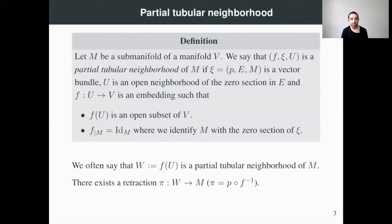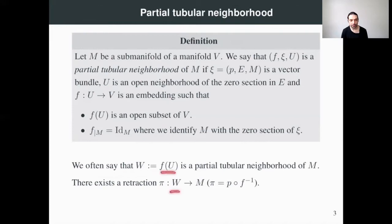The remainder of the definition is the same. We often say that W, the image of U, is a partial tubular neighborhood of M. Since we have the projection of the vector bundle defined in U, we again get a retraction pi from a neighborhood W to M, which is the composition of the inverse of F and P. It is easy to see that if we have a partial tubular neighborhood, then we can construct a tubular neighborhood.